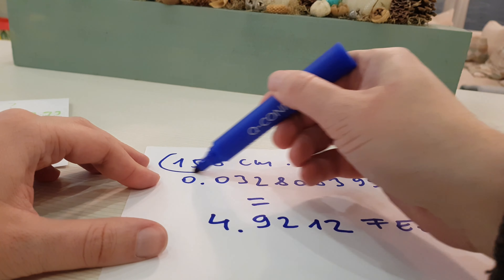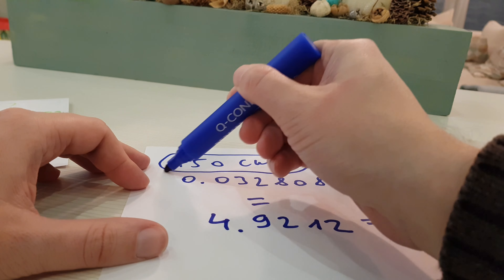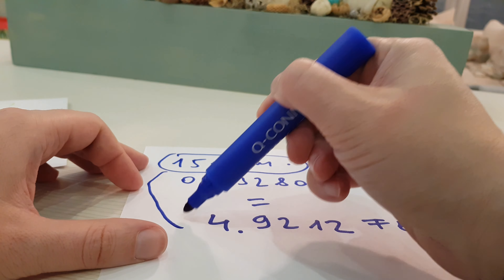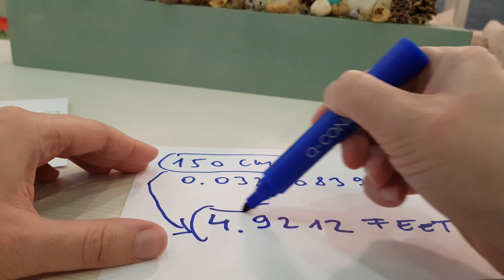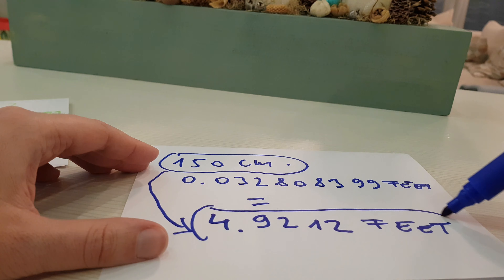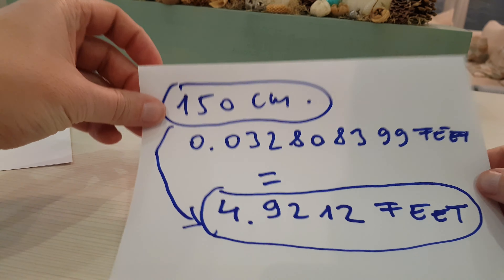Here is the solution again: 150 cm equals 4.9212 feet.